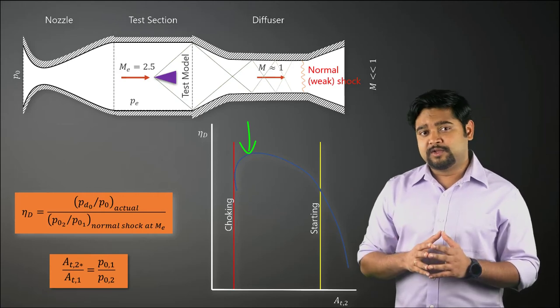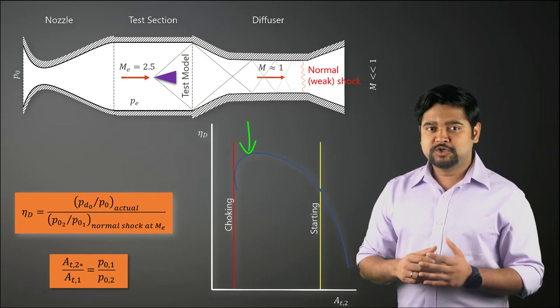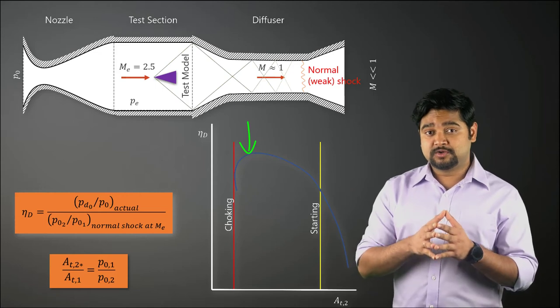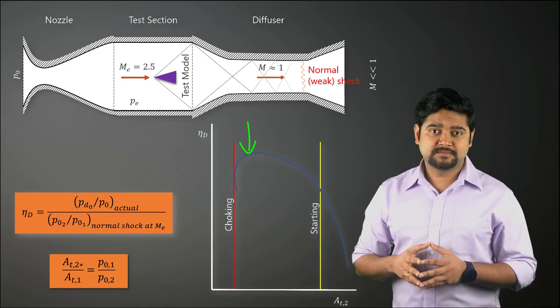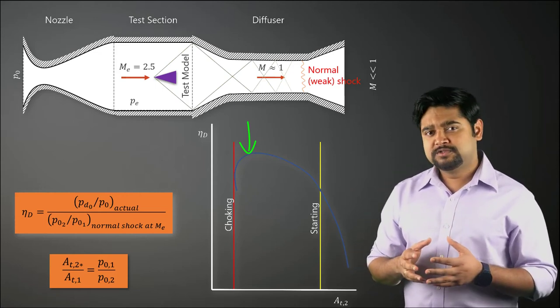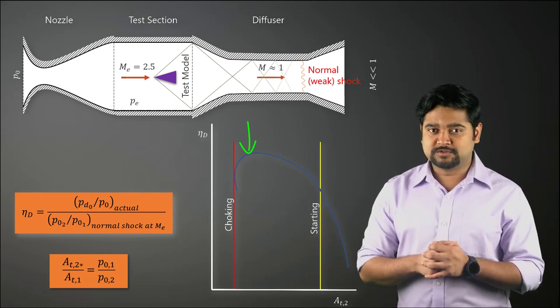For any value below AT2 star, the flow is choked and the efficiency drops significantly. An oblique shock diffuser is usually more efficient than a normal shock diffuser.